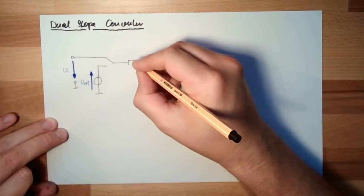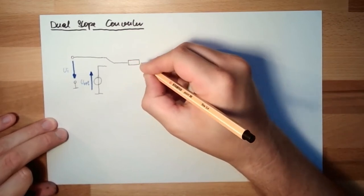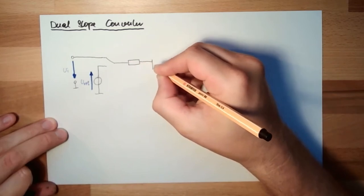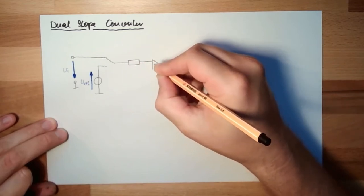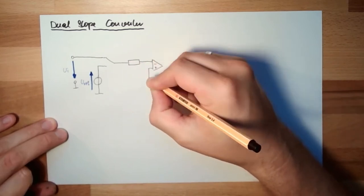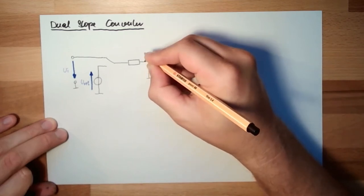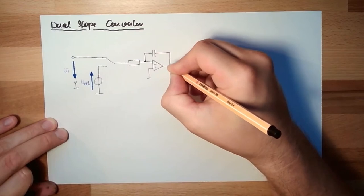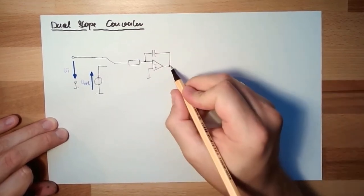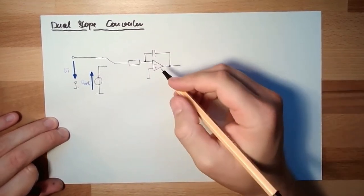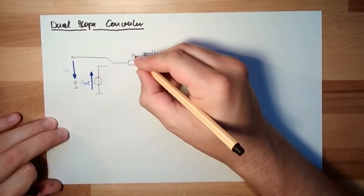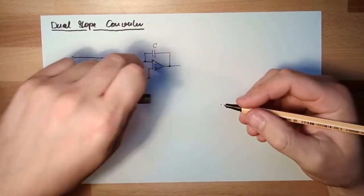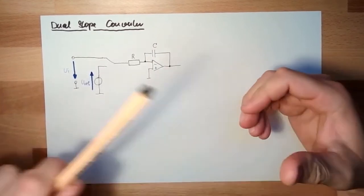And then I do have a little something which is called integrator. And I just draw it now. That's it. That's the integrator. There is an R. There's a capacity C. That's it. And this thing here is a so-called operational amplifier.